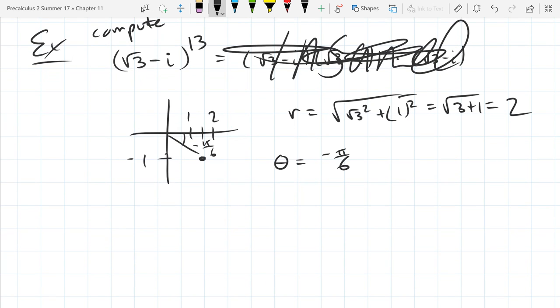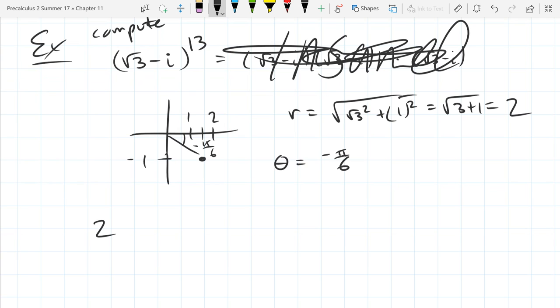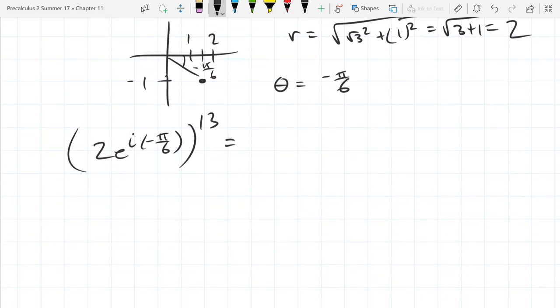All right, and we can rewrite this as 2e^(i(-π/6)) raised to the 13th power. So we have the same number, but we represent it in polar, and this operation becomes very easy.